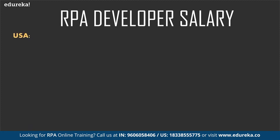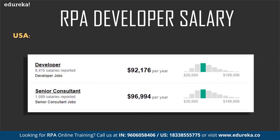Looking at the stats for the United States, according to Indeed.com, estimated from around 18,000 users and job advertisements over the past 36 months, the average salary of an RPA developer ranges from around $92,000 per year for a developer to $96,000 per year for a senior consultant. That's a huge amount of money, so anybody willing to shift their career from testing or non-IT backgrounds to RPA — where you can automate tasks in front office and back office processing — should definitely consider this career.